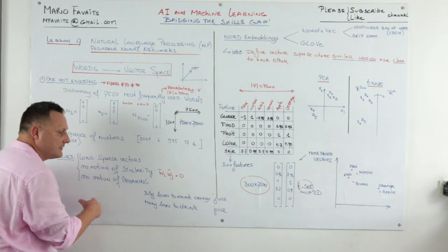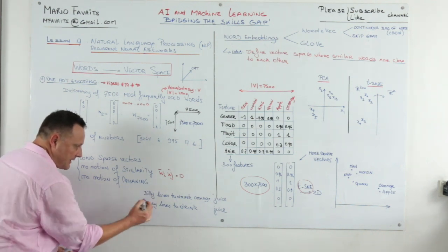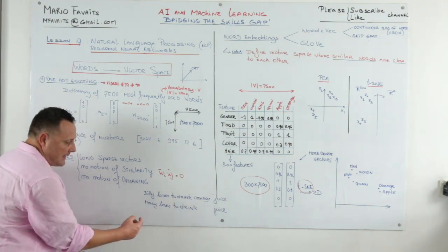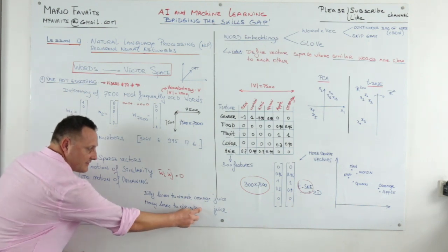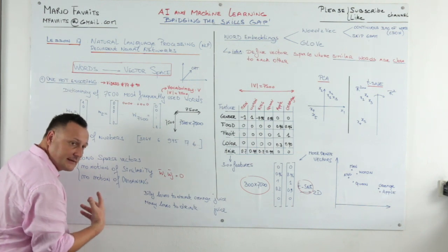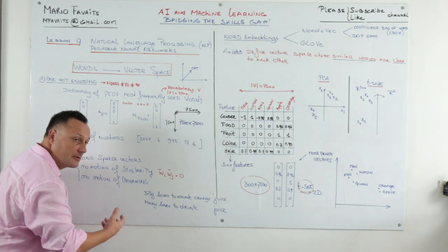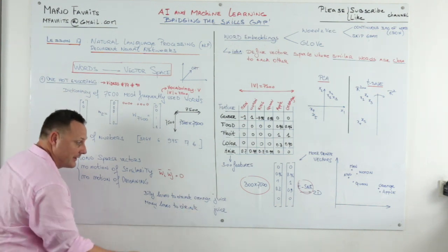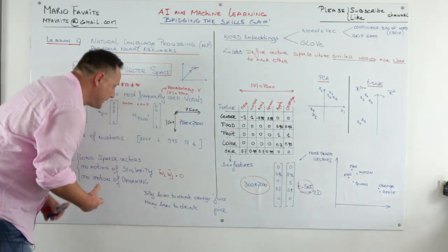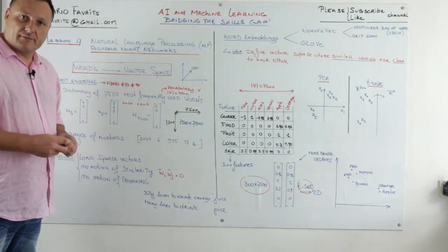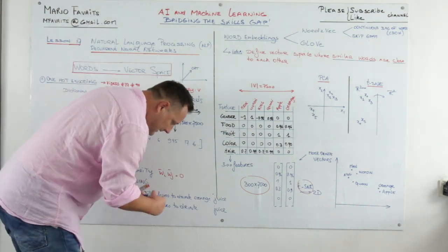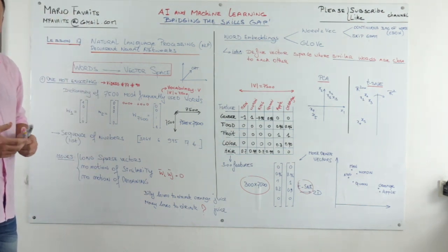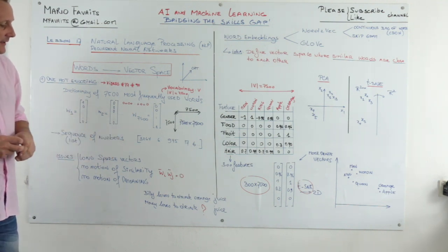There's also no notion of meaning. For example, assume you have the sentence 'Billy lost a drink of orange juice,' and you try to predict the missing word in 'Mary lost a drink of [?] juice.' You expect a fruit like apple juice or pineapple juice. But in one-hot encoding, all words have the same probability of appearing, so the question mark being 'apple' has the same probability as 'car' — which is not what we want.